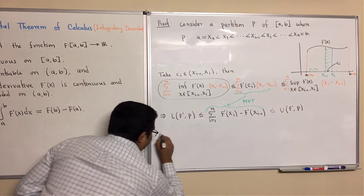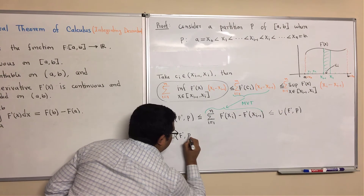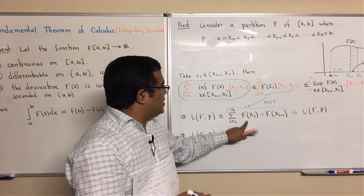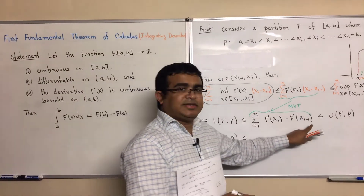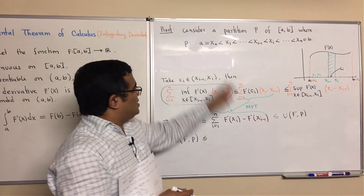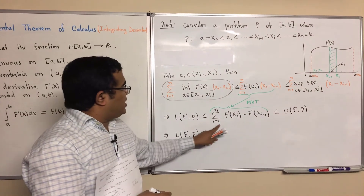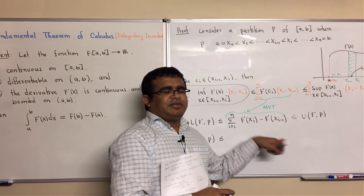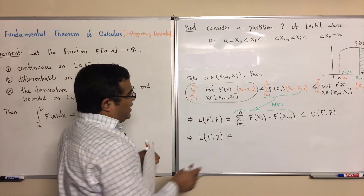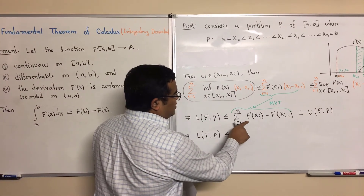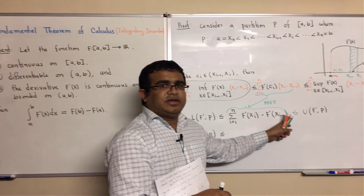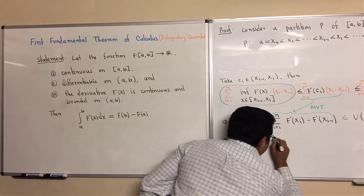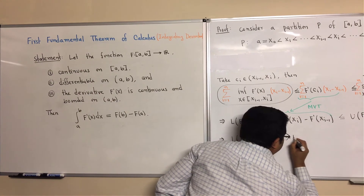So we have: L(F prime, P) less than or equal to the summation. Now when i equals 1, this becomes F of x1 minus F of x0, and x0 is a, so F of a. When i equals 2, it becomes F of x2 minus F of x1, so x1 cancels. When i equals n, it becomes F of xn minus F of x(n-1), and xn is b. So if you simplify, it would be F of b minus F of a, less than or equal to the upper Riemann sum.